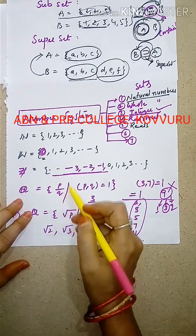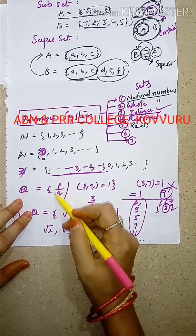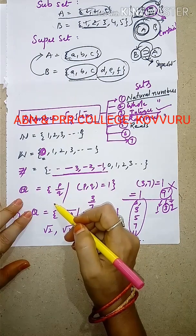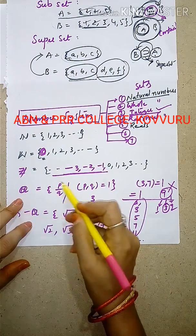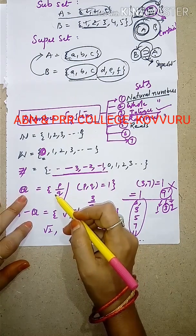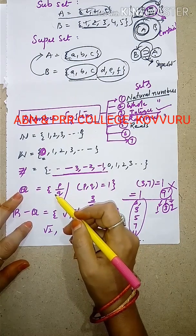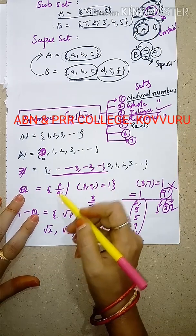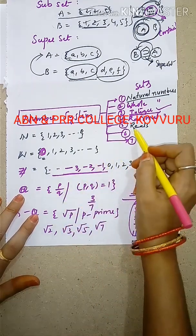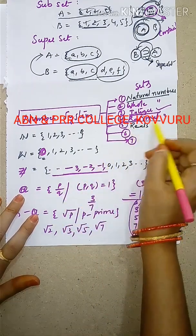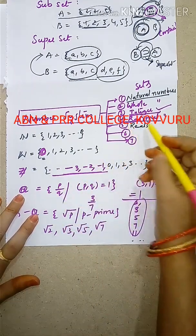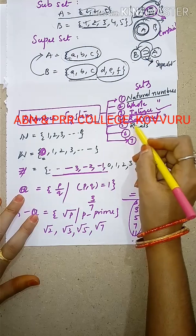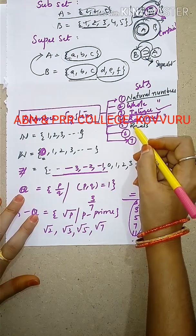Numbers expressed in the P by Q formula — that is, numbers of the form P divided by Q — form the rational number set.